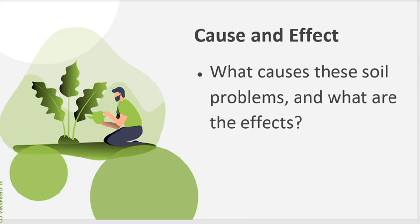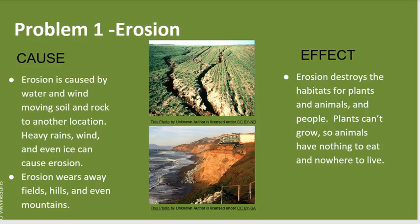What causes these soil problems and what are the effects? Let's look at the first problem, erosion. There are several causes for erosion. First, erosion is caused by water and wind moving soil and rock to another location. Heavy rains, wind, and even ice can cause erosion. Erosion wears away fields, hills, and even mountains.